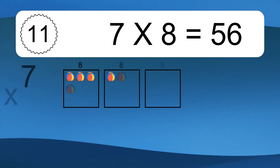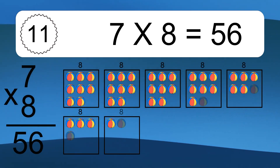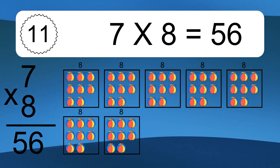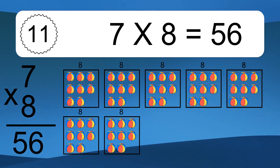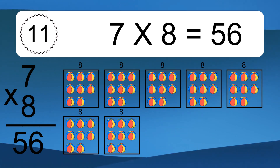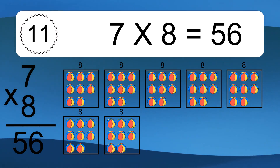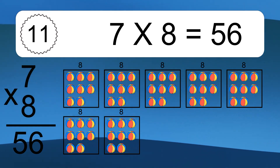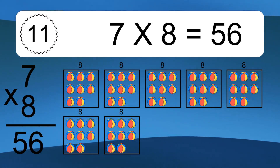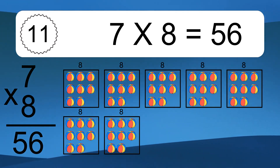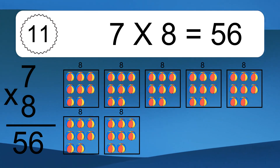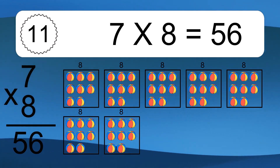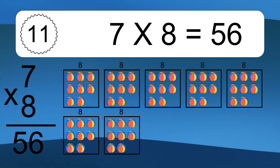7 times 8 equals what? 7 times 8 equals 56.